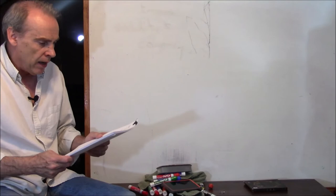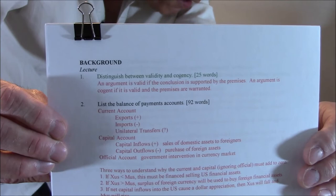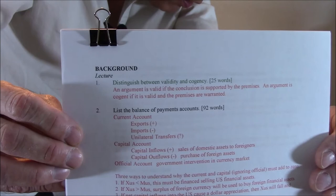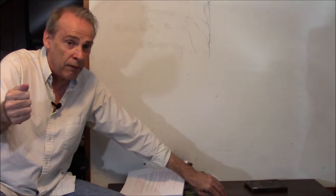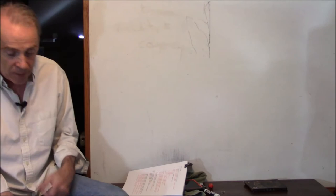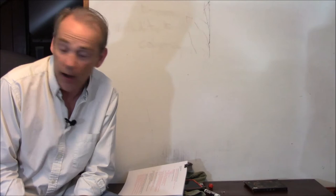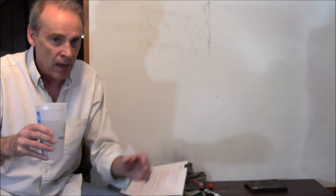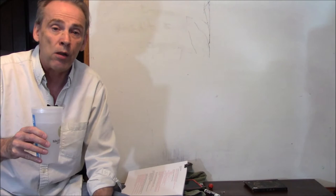Let me show you the definition on screen. An argument is valid if the conclusion is supported by the premises. An argument is cogent if it is valid and the premises are warranted. You can pause the video and jot that down. Also, you can watch these videos at high speed — you don't have to be one-to-one with the chronological passage of time with John Harvey. A 1.5 speed is probably pretty good. Turn on closed captioning too — YouTube will automatically caption everything, it won't be exactly right especially on technical terms, but it helps a lot.